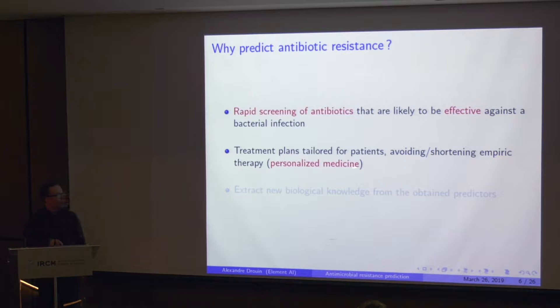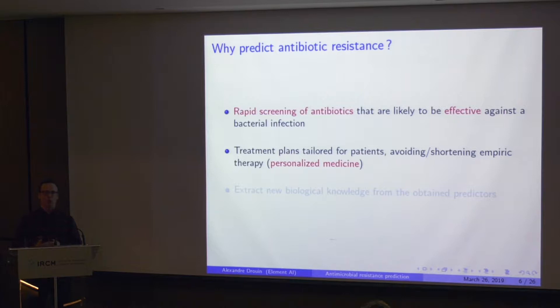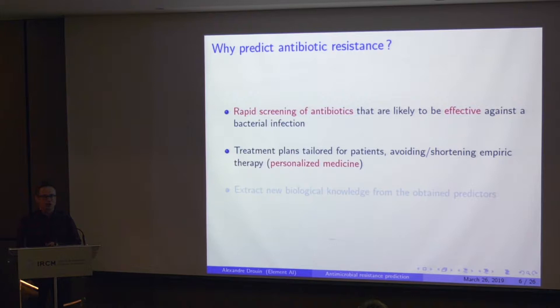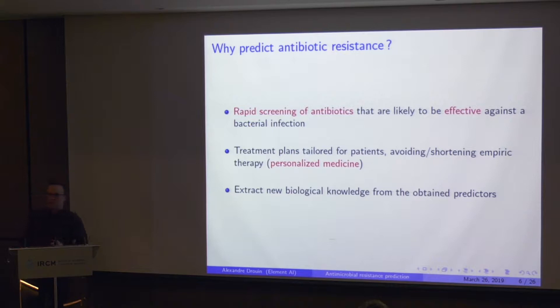If we were able to do that, it would allow us to shorten or even avoid empiric therapy — the process by which a doctor prescribes a treatment based on prior knowledge of the infection without a confirmed resistance profile. The patient typically receives an antibiotic while cultures are pending. By predicting resistance profiles efficiently, we might avoid that. This would result in lower healthcare costs and lower morbidity. We might also be able to understand how models make predictions and gain new biological knowledge from them.